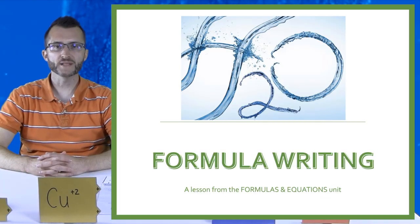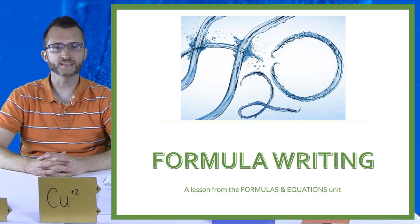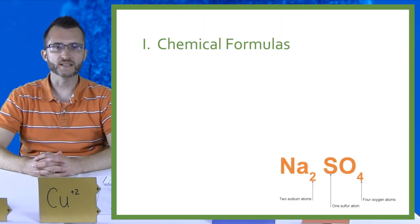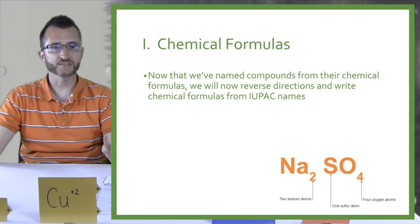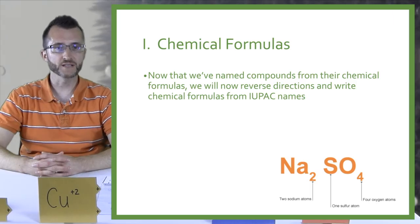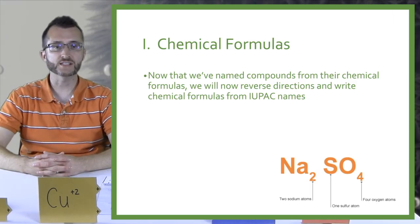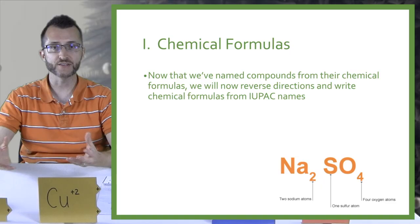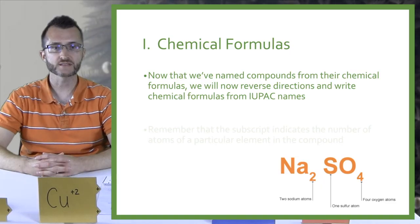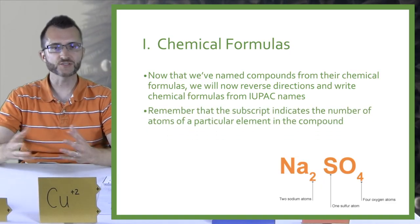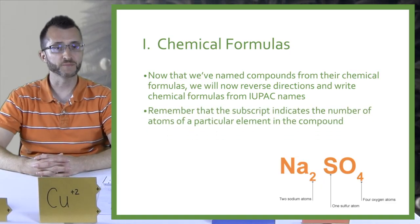So everything in this lesson is pretty much the reverse of last lesson, so let's get started. Formula writing — a lesson from the formulas and equations unit. Chemical formulas: now that we've named compounds from their chemical formulas, we will now reverse directions and write chemical formulas from IUPAC names. Remember that the subscript indicates the number of atoms of a particular element in the compound.